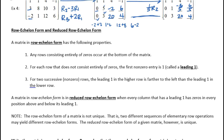We're going to pick up on section 8.4, the second part, and we're going to start with talking about matrices in something called row echelon form and reduced row echelon form.